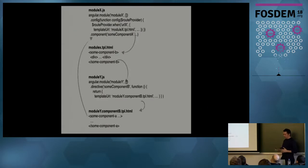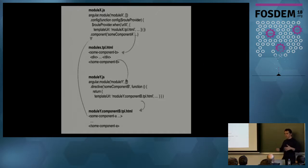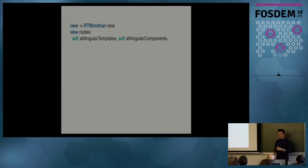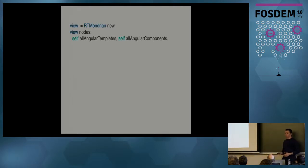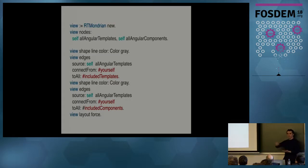So we built infrastructure in Moose to import the JavaScript and templates, get all the components and their dependencies. It took a few days to get everything working correctly. Then we could write a query: give me all the Angular templates and all the Angular components — because we had them in our model. Then build a view: show edges from templates to included templates, and from templates to components. Apply a force layout, and we got a visualization of all the modules, components, and their connections.